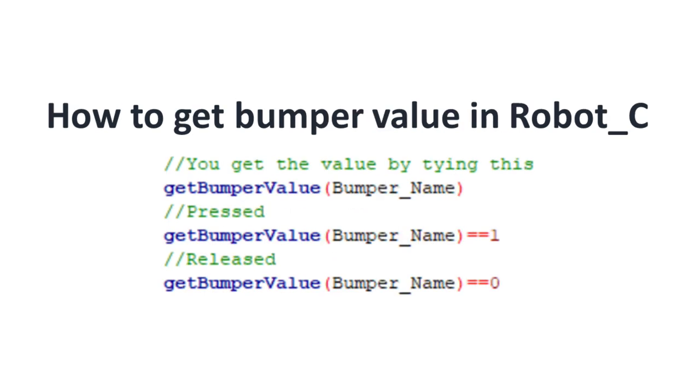This is how you get bumper value in Robot C. You get the value by typing get bumper value and inside its bumper name, and when the value is 1 which means it's pressed, it's true, and when it is 0, it's false which means it is released.